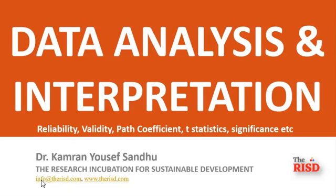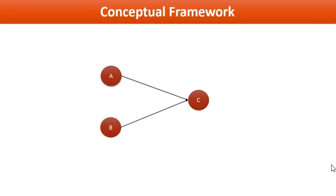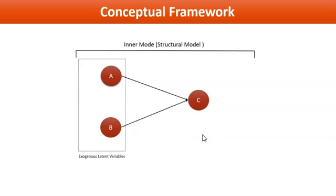Usually there are two sub-models: one is the inner model, which is the structural model. Independent variables like A and B are independent variables and we call them exogenous latent variables. An exogenous variable has path arrows pointing towards the endogenous variable, which will have at least one arrow coming towards it.